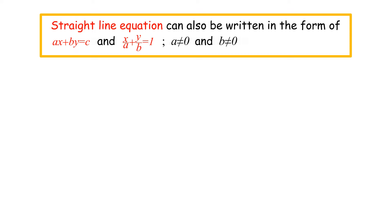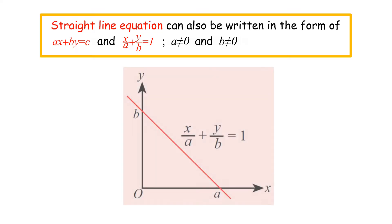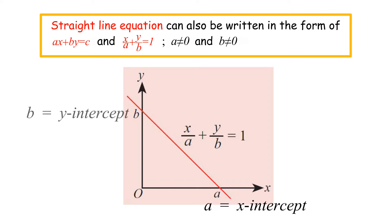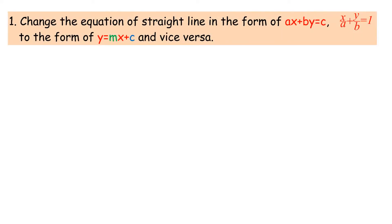The straight line equation can also be written in the form ax plus by equals c, and x over a plus y over b equals 1, where a is not equal to 0 and b is not equal to 0. In the form x over a plus y over b equals 1, a equals the x-intercept and b equals the y-intercept. We can change between the form ax plus by equals c and x over a plus y over b equals 1, and the form y equals mx plus c, and vice versa.